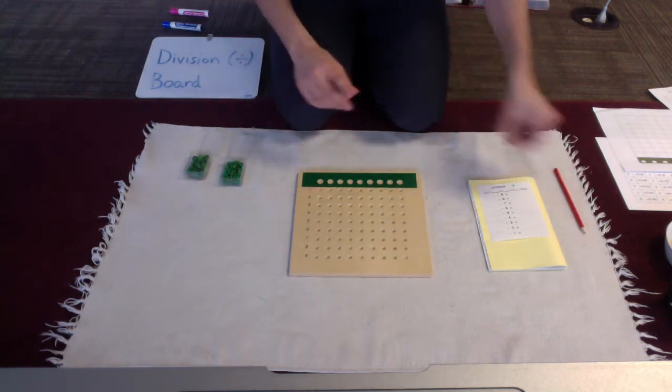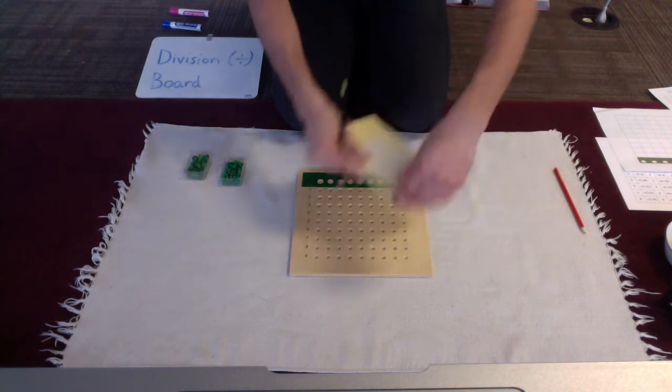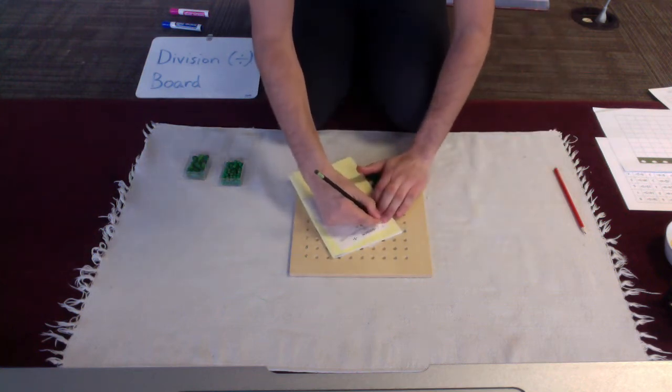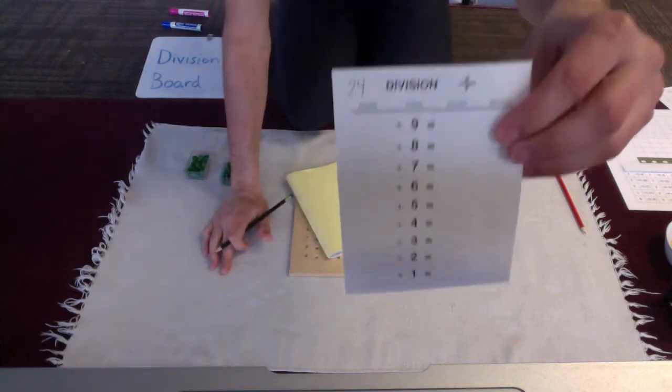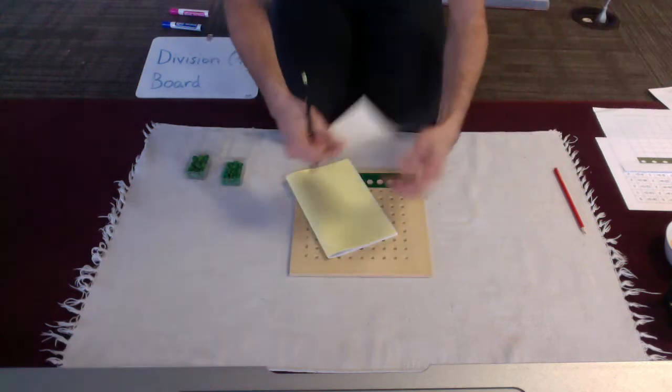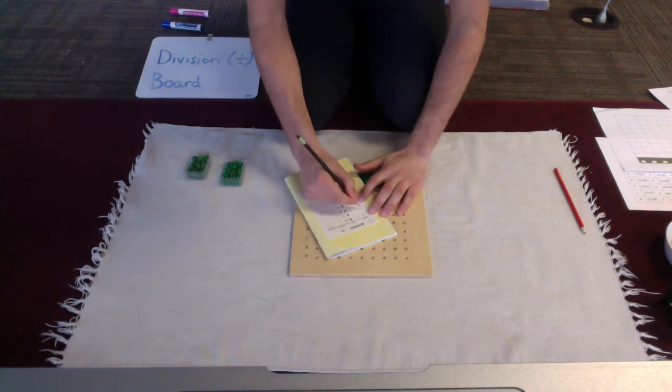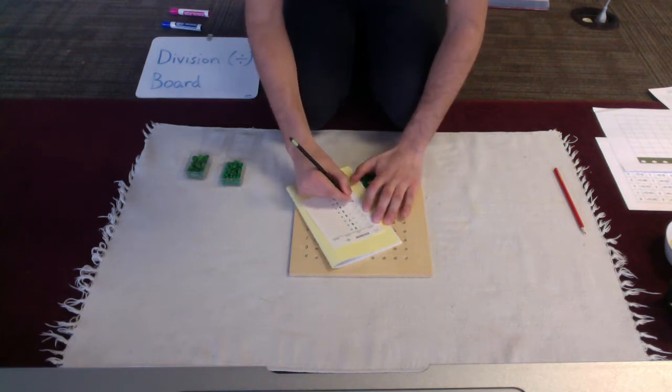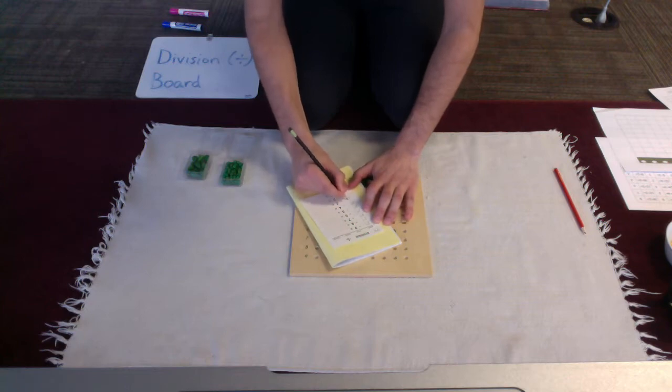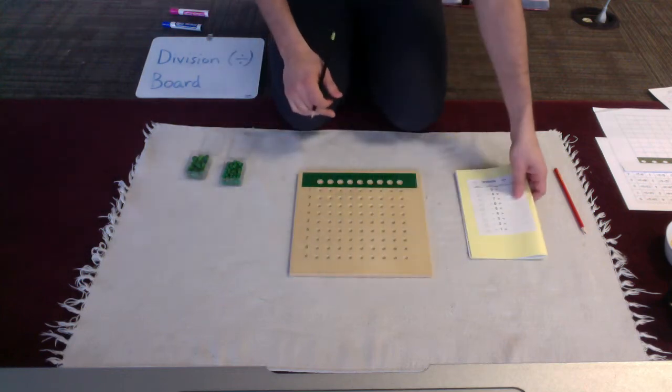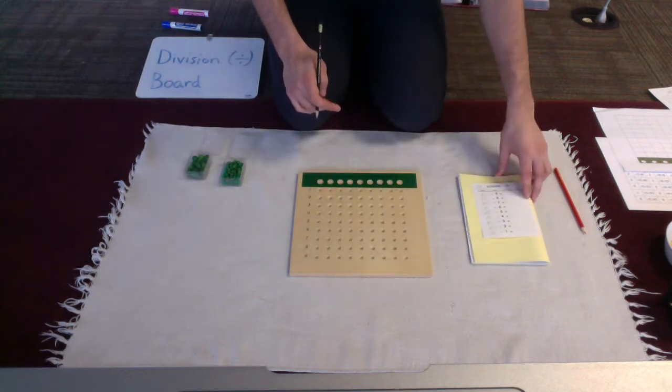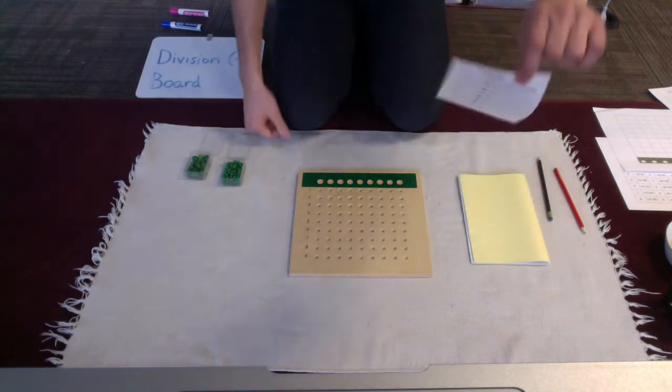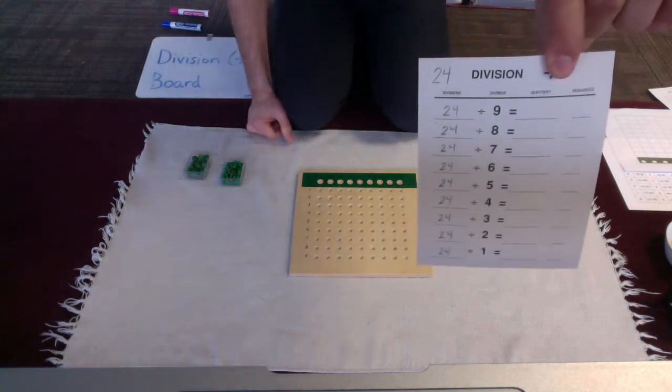So we are going to look at the dividend, 24. So I'm going to divide 24 by 9, by 8, by 7, by 6, by 5, by 4, by 3, by 2, and I'm going to try it by 1. And we are going to see how it goes. So I just went ahead and recorded my dividend on each of those lines there.